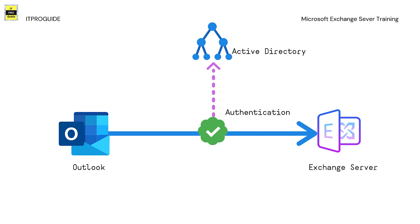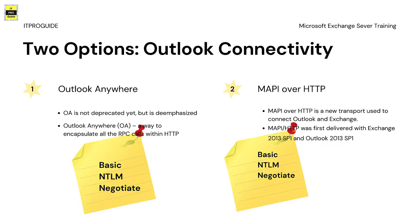To use Outlook Anywhere or MAPI over HTTP, we have separate options to configure how Outlook clients with these protocols get authenticated with Exchange Server. We will look at the Outlook Anywhere authentication options and also the authentication options available with MAPI over HTTP.